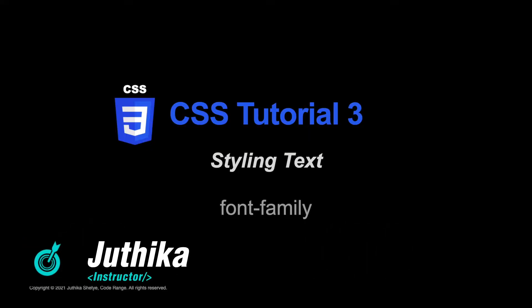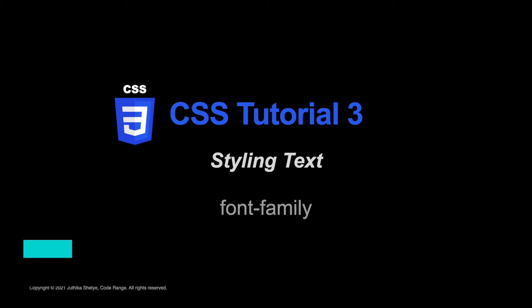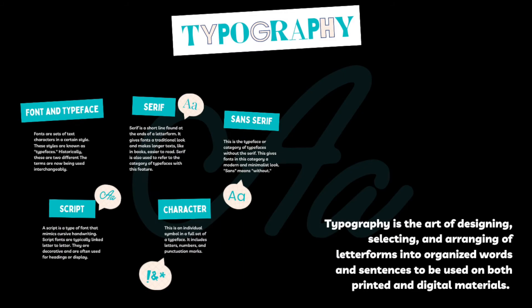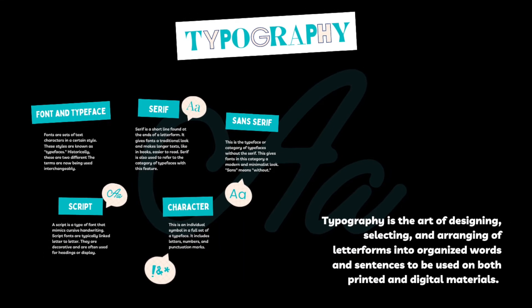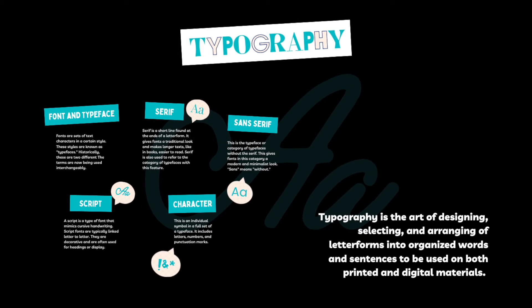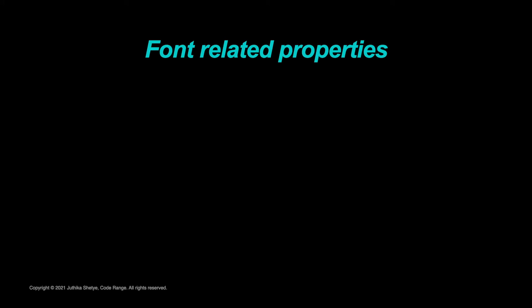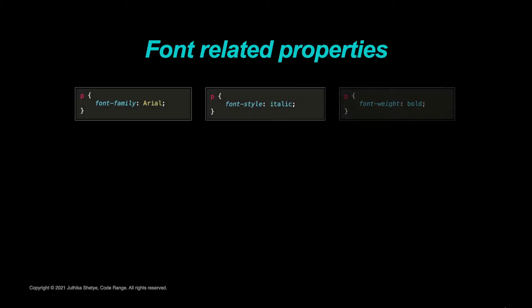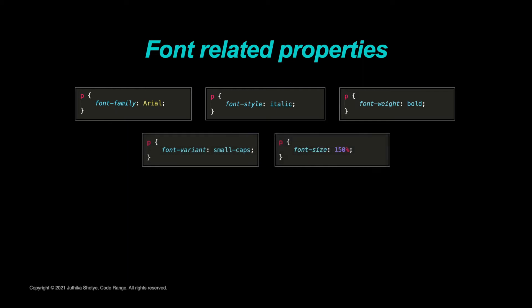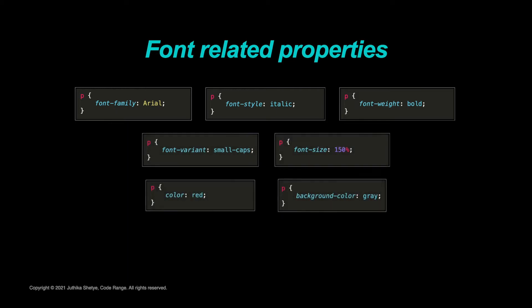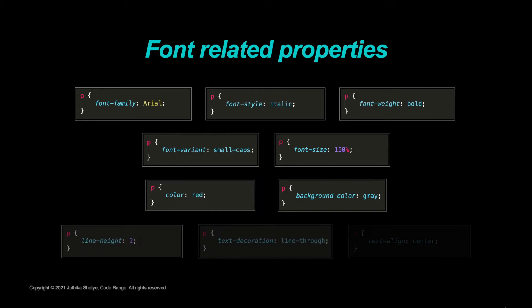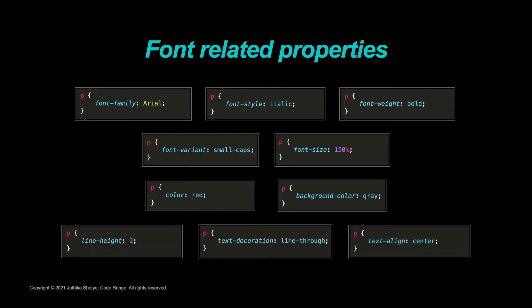Hi, this is Juthika and welcome to your third CSS tutorial. Today, we are going to talk about styling the text on your web page. There are lots of typography related CSS properties that can be used to change the style of text. One of those is to style the font of your text. Some of the things related to styling the font are the font family, font style, font weight, font variant, and font size. We could also change the color and background color of our text like we saw in the previous video. We could also alter the line height, add some decoration or change the alignment of our text.